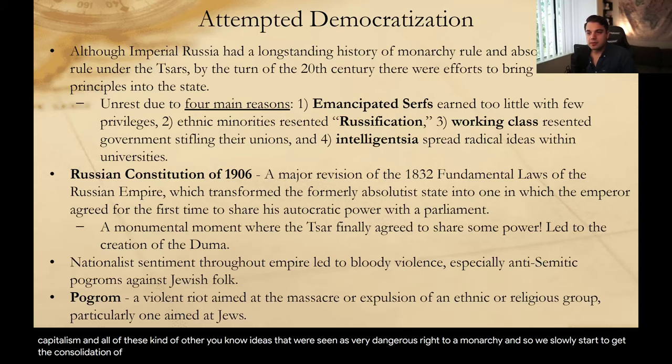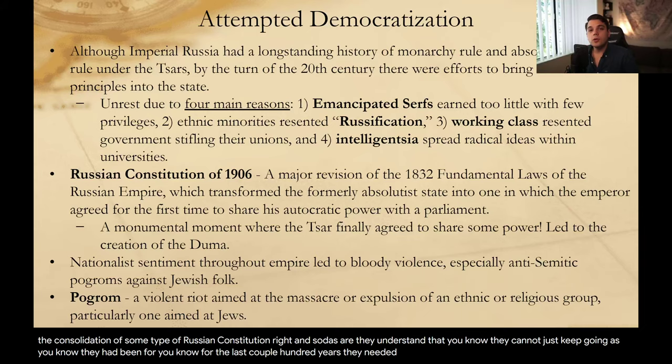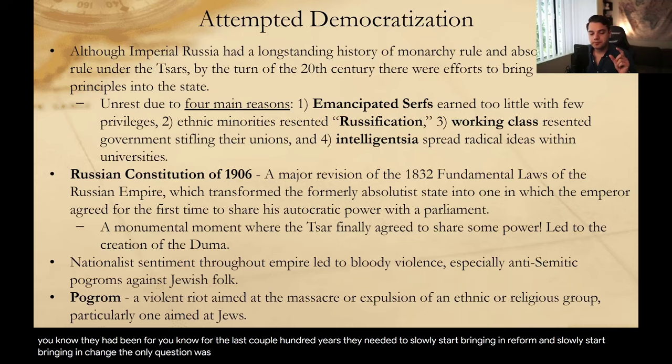So we slowly start to get the consolidation of some type of Russian constitution. The Tsars understood that they could not just keep going as they had for the last couple of hundred years. They needed to slowly start bringing in reform and change. The only question was within the Russian Empire: at what level were they going to institute change, and how fast?